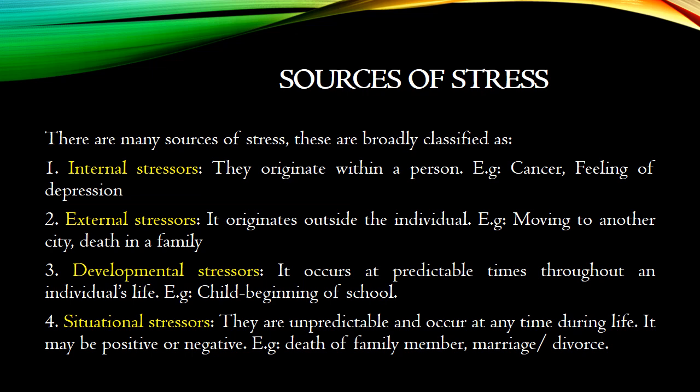Third is developmental stresses — they occur at predictable times throughout an individual's life. An example is a child beginning school. Fourth is situational stresses — they are unpredictable and occur at any time during life. Developmental stress is predictable, while situational stress can occur at any time and is unpredictable. It may be positive or negative in nature. Examples include death of a family member, marriage, divorce, etc.